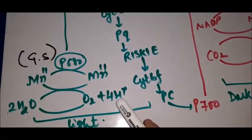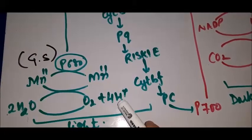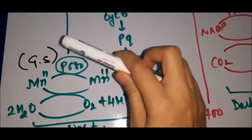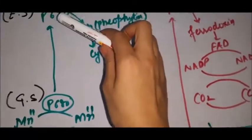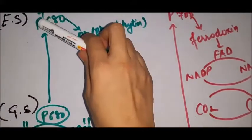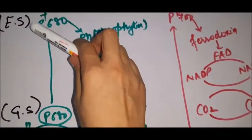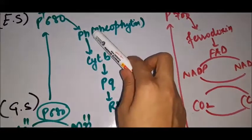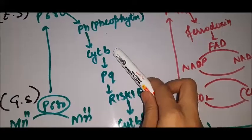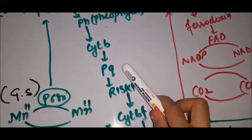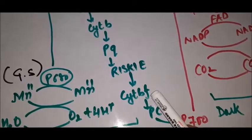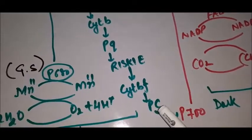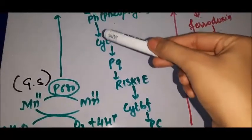The electron transfer pathway from PS2 is: pheophytin → chlorophyll B → plastoquinone → Rieske center → cytochrome bf → plastocyanin. This is the complete electron transfer chain in the light reactions of photosynthesis.